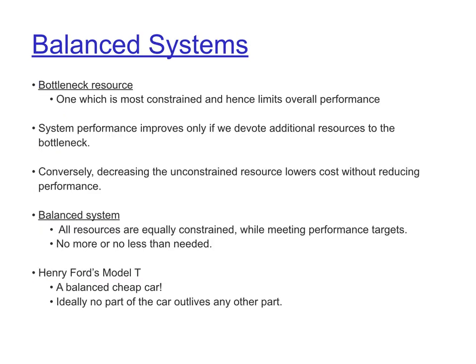When designing a system under resource constraints to meet a performance target, it's a good idea to aim for a balanced system. If you are not meeting a performance target, some resource in the system is bottlenecked — it is being fully utilized and preventing you from reaching your target. To improve performance, you must eliminate this bottleneck. One option is to add more resources, which may not always be possible — for example, you cannot easily increase the battery on a cell phone.